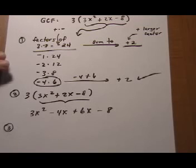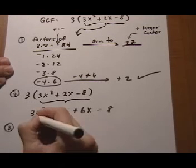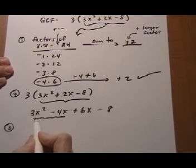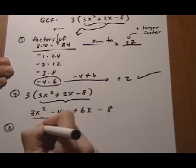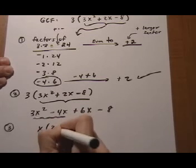Now I factor by grouping. So the first 2, I've got x comes out, and I'm left with 3x, take away 4.